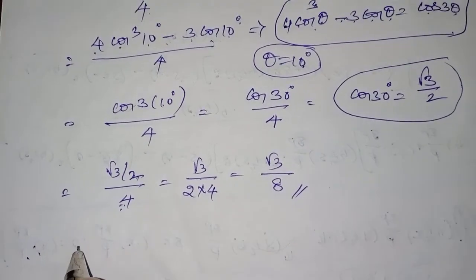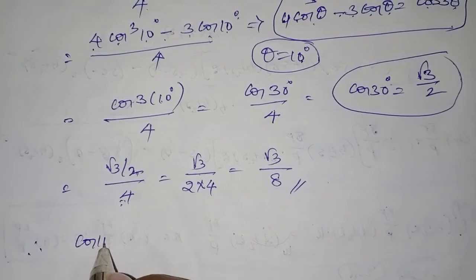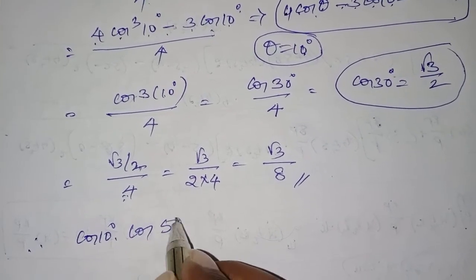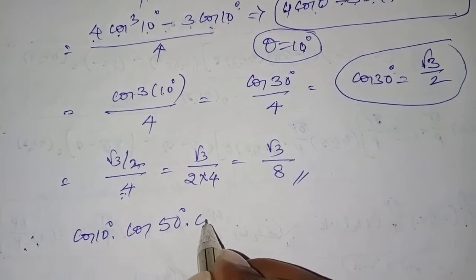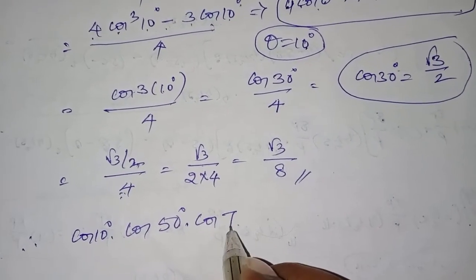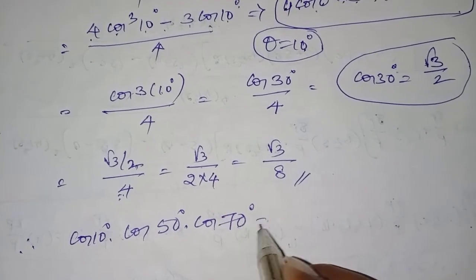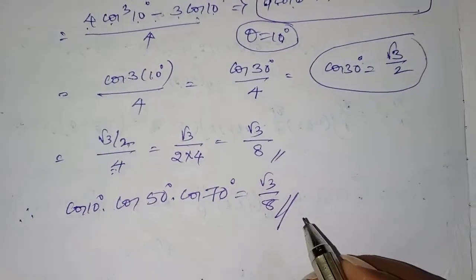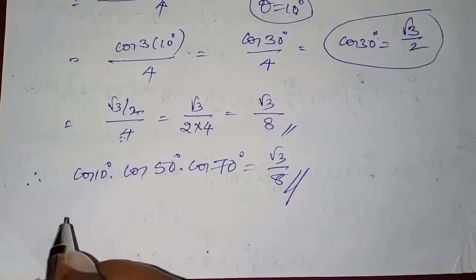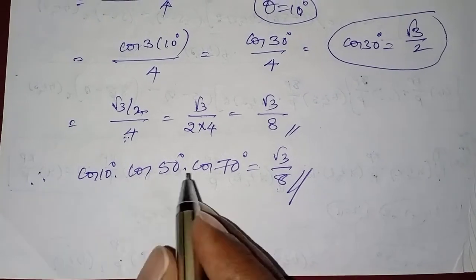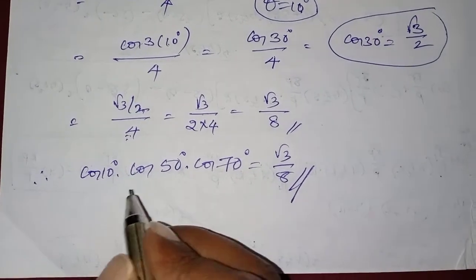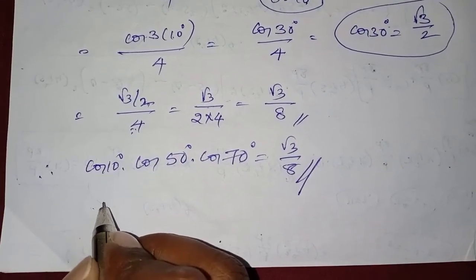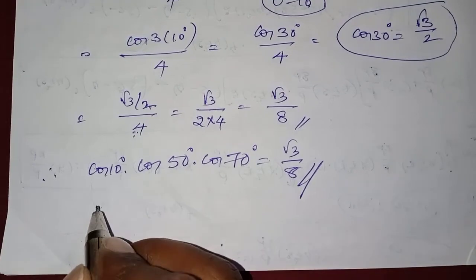Hence it is proved. Therefore, cos 10 degrees into cos 50 degrees into cos 70 degrees is equal to root 3 by 8. After this, we can simply use one basic formula as a shortcut.